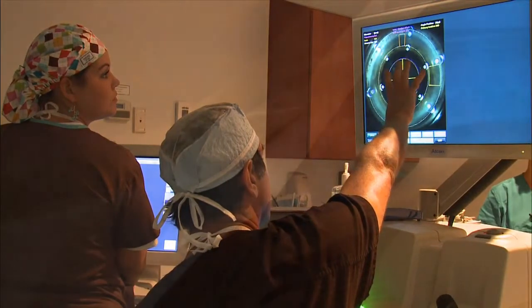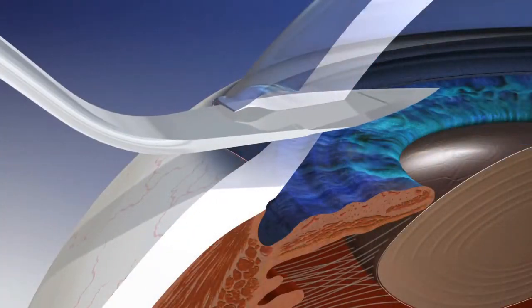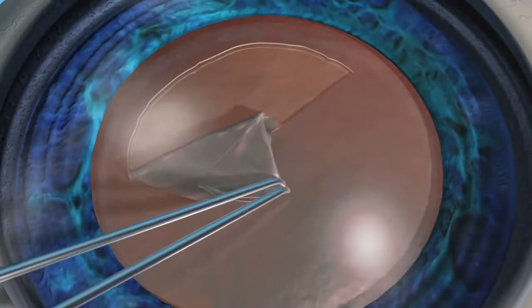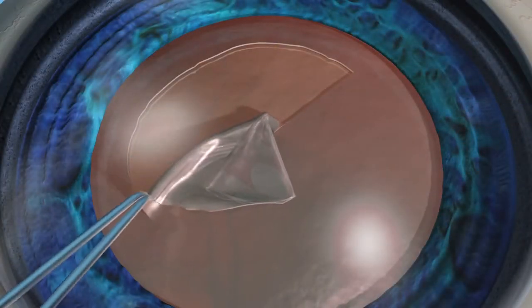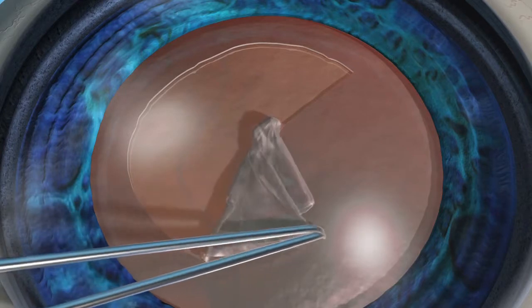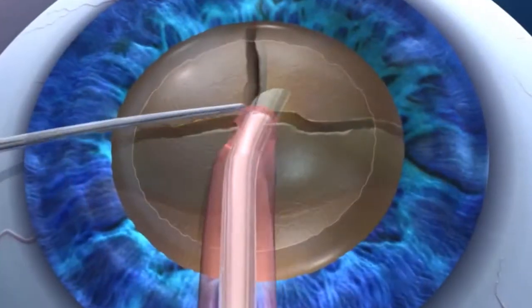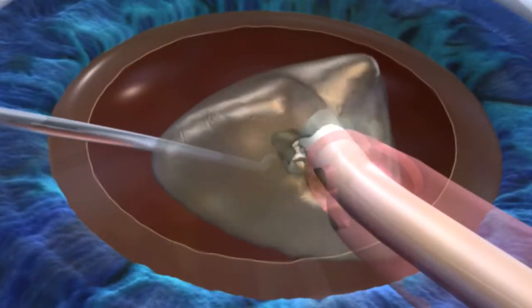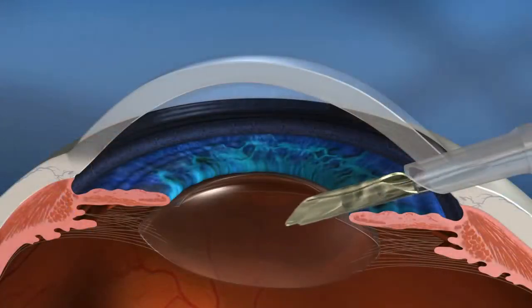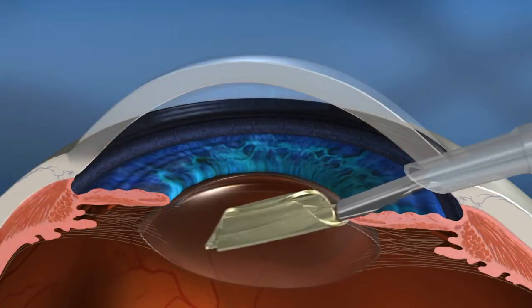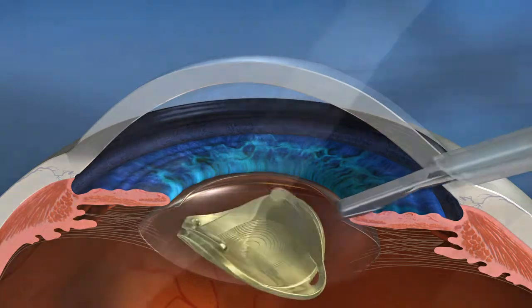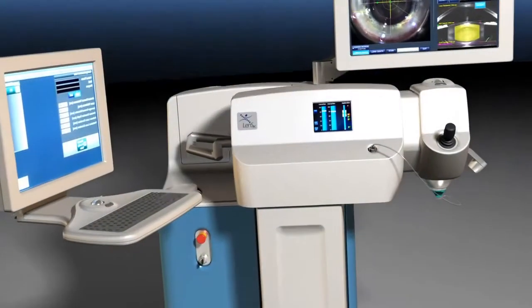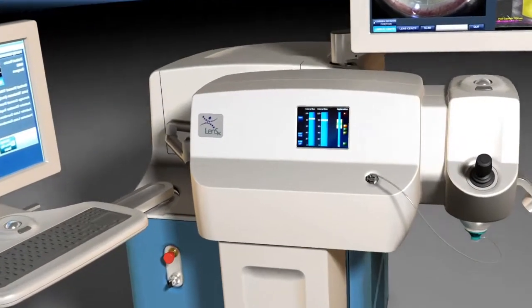Cataract surgery involves corneal incisions, capsular excess, a circular hole in the capsular bag, lens fragmentation, phacoemulsification, intraocular lens insertion, and incision closure. The LensX laser can assist with some of the most challenging steps.